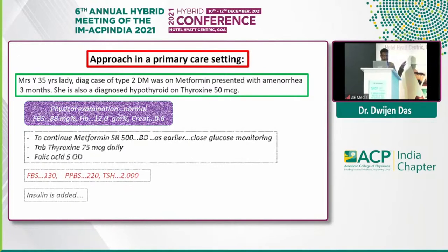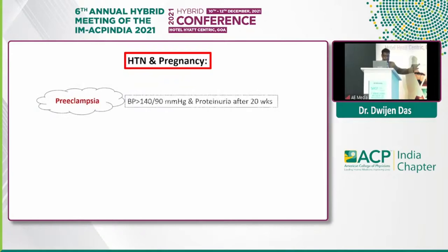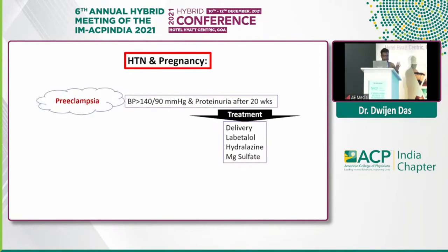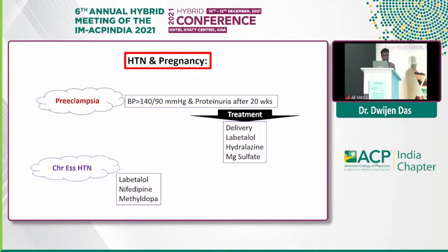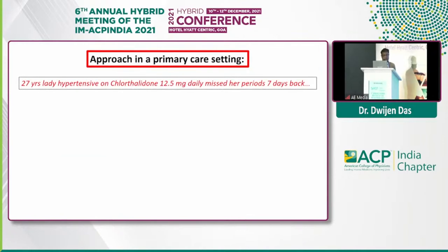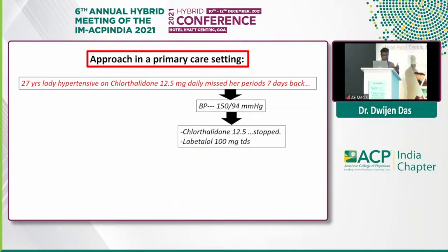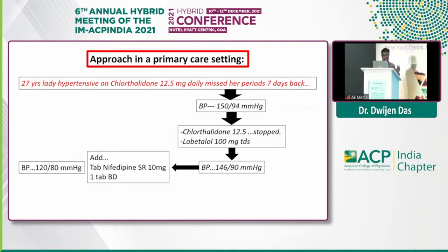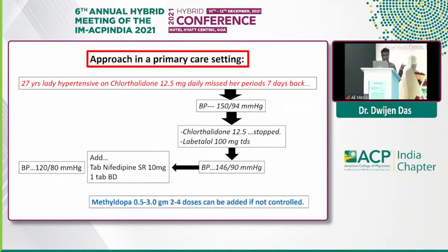Hypertension in pregnancy is another common association. It may be associated with preeclampsia, where there is new onset hypertension after 20 weeks of gestation associated with proteinuria — the actual treatment is delivery of the fetus and placenta, but we may take the help of labetalol, hydralazine, and magnesium sulfate. For chronic essential hypertension, the drug of choice is labetalol, nifedipine, and methyldopa. In one scenario, a 27-year-old hypertensive lady controlled on chlorthalidone 12.5 mg had a missed period for seven days. Since chlorthalidone is not safe during pregnancy, we converted it to labetalol 100 mg TDS. Blood pressure was rechecked after two weeks and still high, so we added nifedipine 10 mg twice daily, and the blood pressure was controlled. Had it not been in control, amlodipine could have been another option.